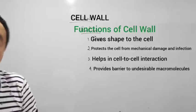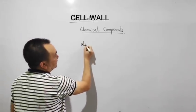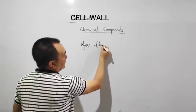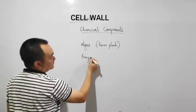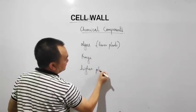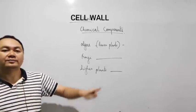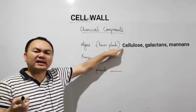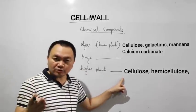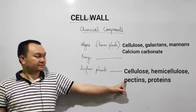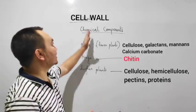Now what are the chemical constituents? It depends upon which cell the cell wall is present in, like if it is in algae. Do not forget algae are lower plants. Then if it is fungi or if it is higher plants, the chemical constituents are all different. In algae, it is made up of cellulose, galactans, mannans, and minerals like calcium carbonate. And in other plant cells, it is made up of cellulose, hemicellulose, pectins, and proteins. While the main component of a fungal cell wall is chitin.